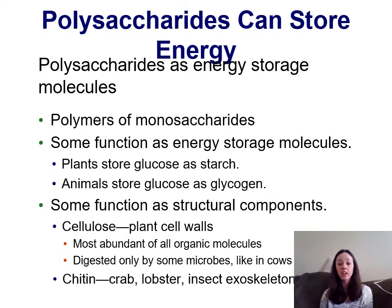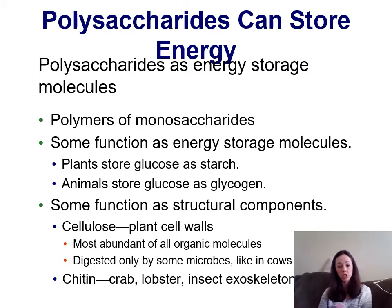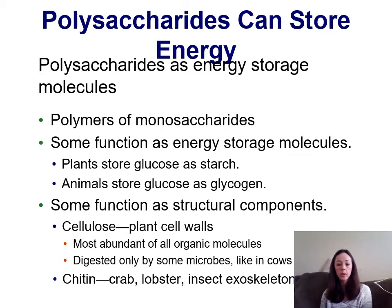Polysaccharides are just really long chains of monosaccharides. Because they contain so much sugar, they contain a lot of energy, so polymers are used as energy storage in both plants and animals. Plants will store glucose as starch, a polysaccharide, and animals will store glucose as glycogen, another polysaccharide. Polysaccharides can also have structural roles — we find cellulose within plant cell walls, and chitin within the exoskeletons of crabs, lobsters, and insects.